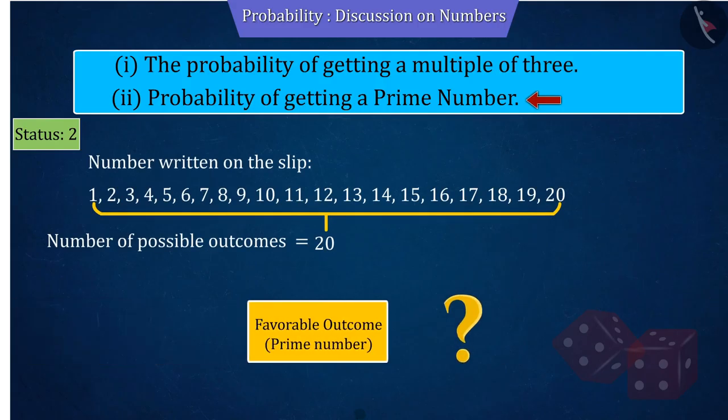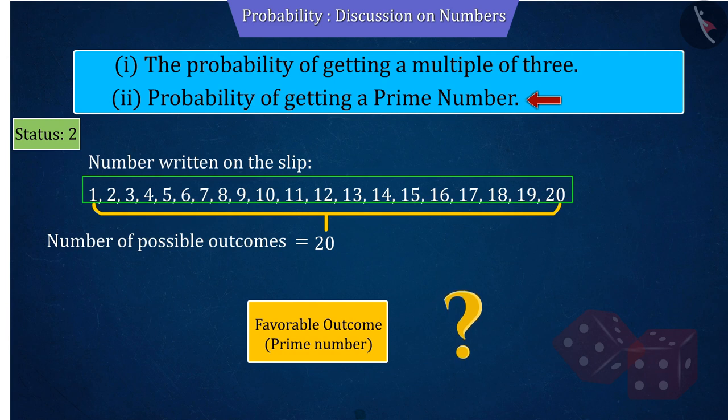Now can you find the outcome favorable to the event from these 20 numbers?